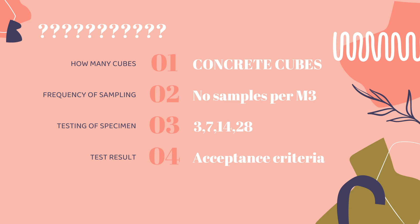Hello guys, before starting the session I would like to ask you a few questions. Suppose you are observing two sites — first one is residential and second one is commercial. Residential work is 500 square feet and commercial is 5000 square feet. How many cubes will you cast — will it be three for both, or will the quantity of cubes increase as per the quantity of work? If you know the answer, comment yes; if not, I will tell you in this video.